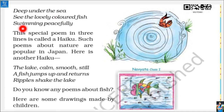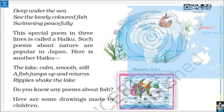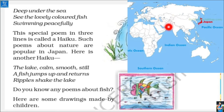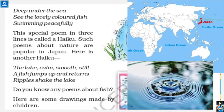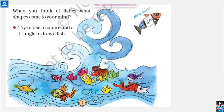This special poem is called a haiku, and such poems about nature are very popular in Japan. Japan is to the east of our beloved Bharat (India). In Japan, one more haiku is: 'The lake is calm, smooth, still — a fish jumps up and returns, ripples shake the lake.' Ripples means the waves that form when water drops fall into a river or pond. Do you know any poem about fish? You may have learned 'Machli jal ki rani hai, jiwan uska paani hai.'